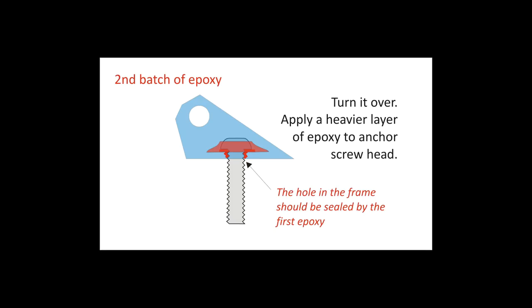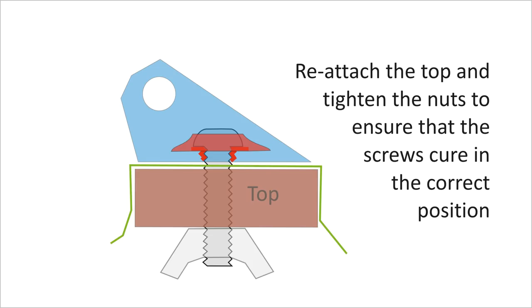Then, mix a second, larger batch of epoxy, turn the frame over, and carefully apply enough epoxy to anchor each screw head firmly. Again, fasten the wood top firmly to ensure that the screws cure in exactly the correct position.